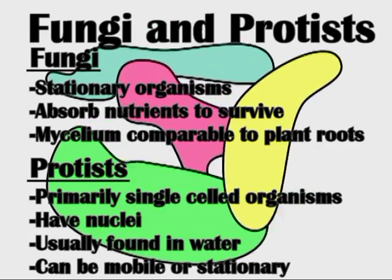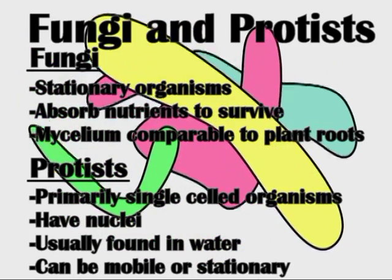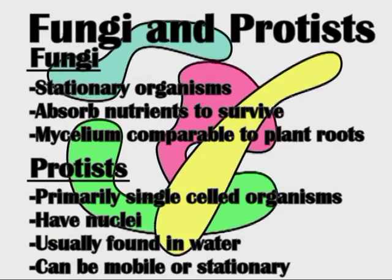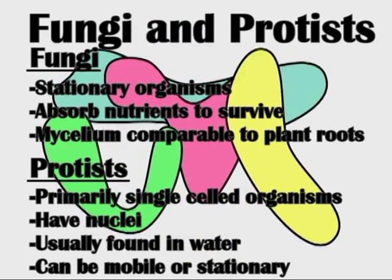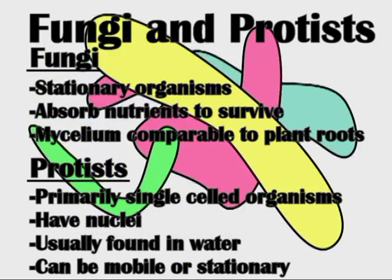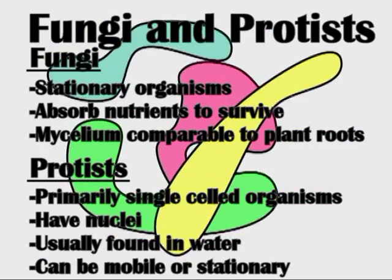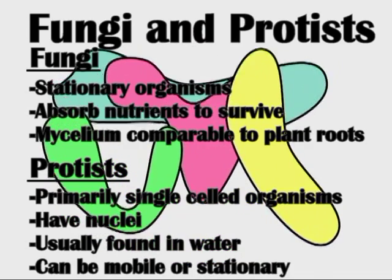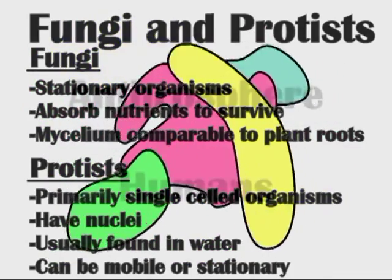Fungi are motionless organisms that absorb nutrients to survive. Protists are mainly single-celled organisms with nuclei. They are usually found in water and can be either mobile or stationary.